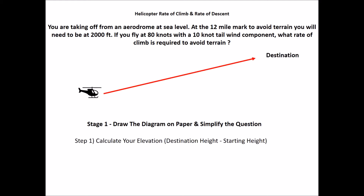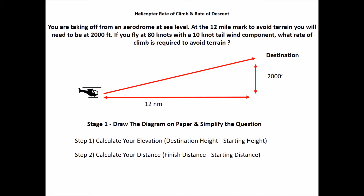For our final question, we'll calculate a helicopter rate of climb. You're taking off from an aerodrome at sea level; at the 12 mile mark to avoid terrain, you'll need to be at 2000 feet. If you fly at 80 knots with a 10 knot tailwind component, what rate of climb is required to avoid terrain? Stage one: draw the diagram and simplify. Step one, elevation: destination height minus starting height — 2000 feet minus 0 feet, so 2000 feet required climb. Step two, distance: 12 miles minus 0 gives 12 nautical miles. Step three, ground speed: 80 knots plus 10 knot tailwind gives 90 knots ground speed.